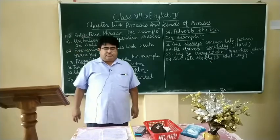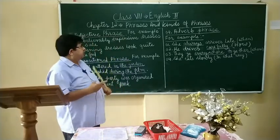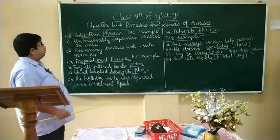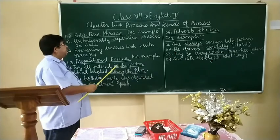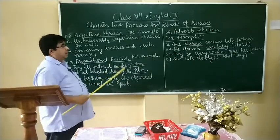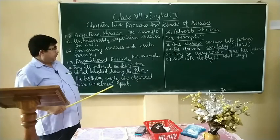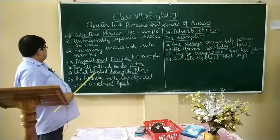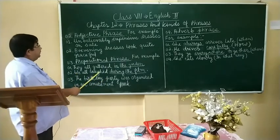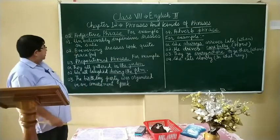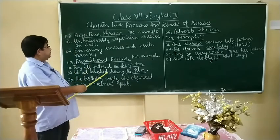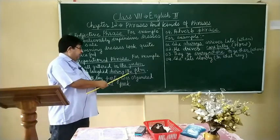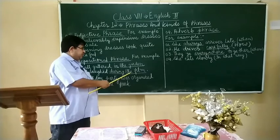Now children, see the example. They all gathered in the garden. Here the preposition is in and the object noun is the garden, which is the object noun of the sentence. You see the second example: We all got a laugh during the film. Here the prepositional phrase is during the film, and the film is the object noun of the sentence.